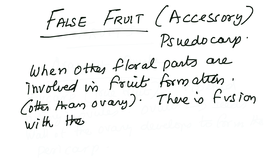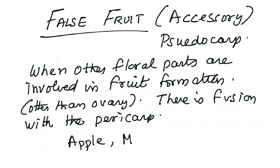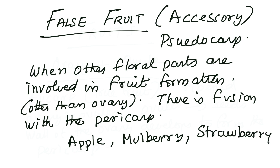An interesting feature of a false fruit is that there is a fusion with the pericarp — the pericarp fuses with other parts of the floral organs which develop, so the pericarp is not free. Examples include apple, mulberry, and strawberry.